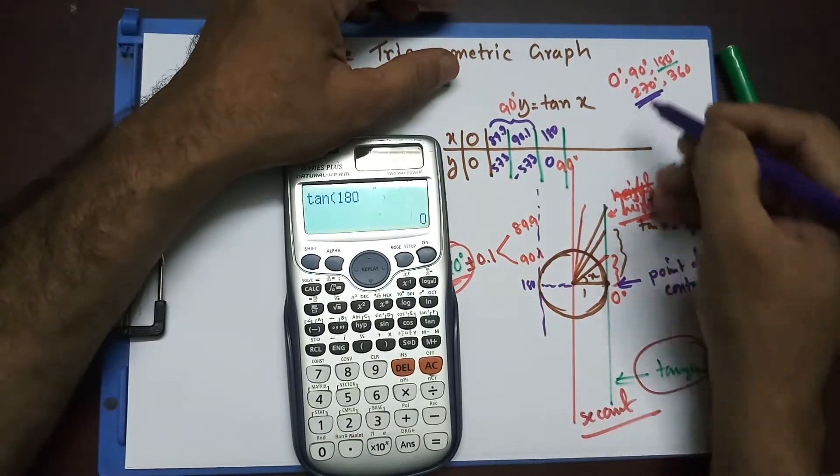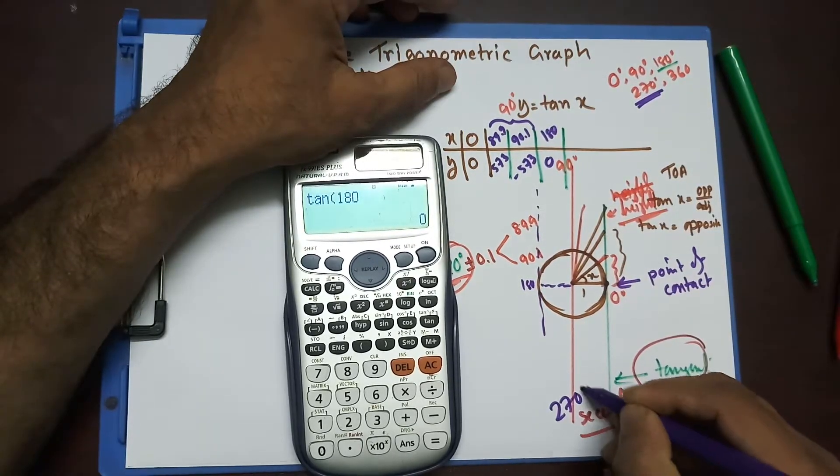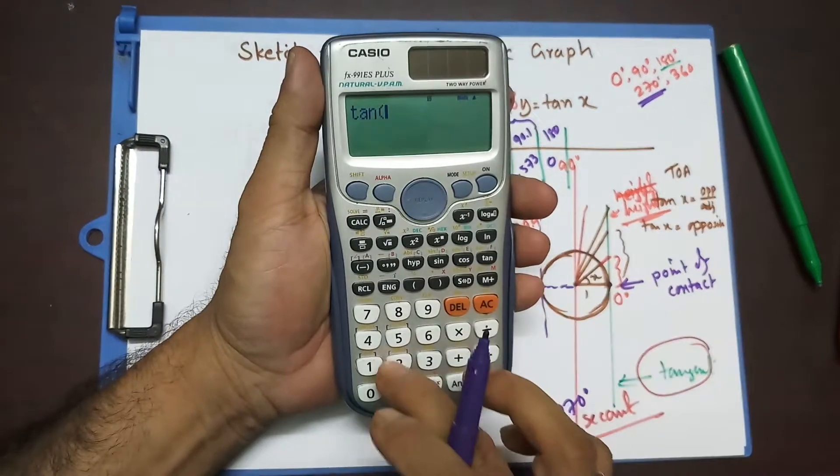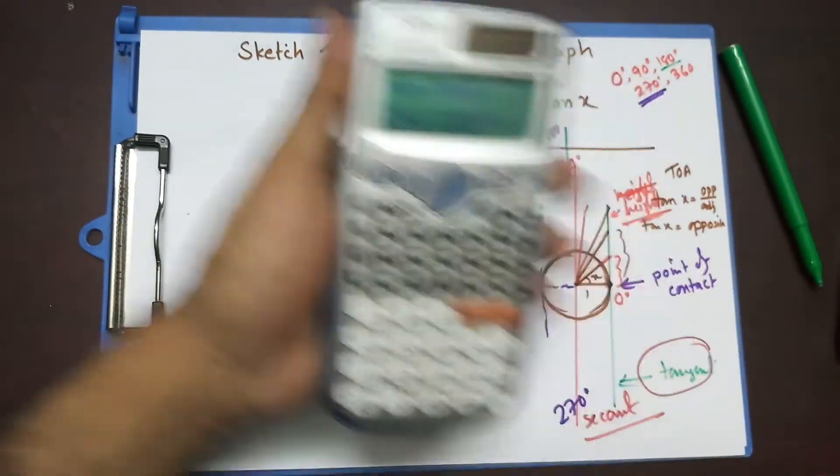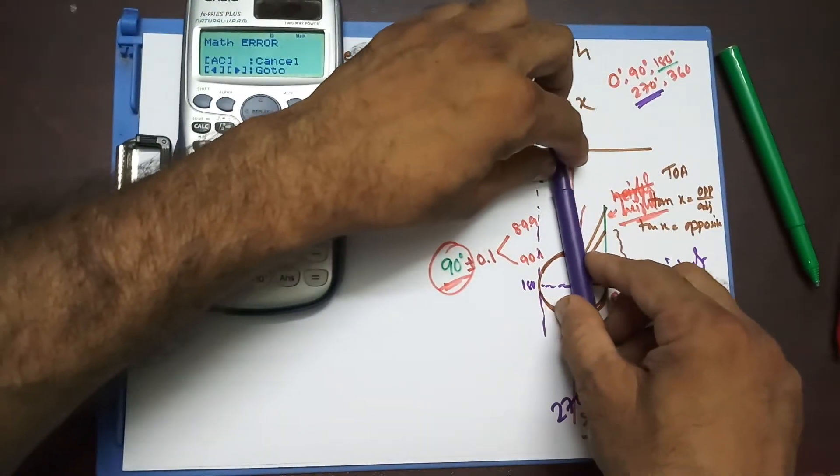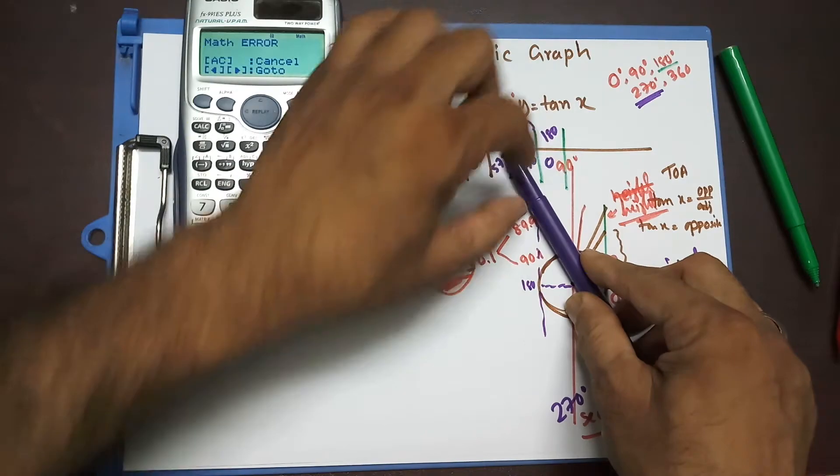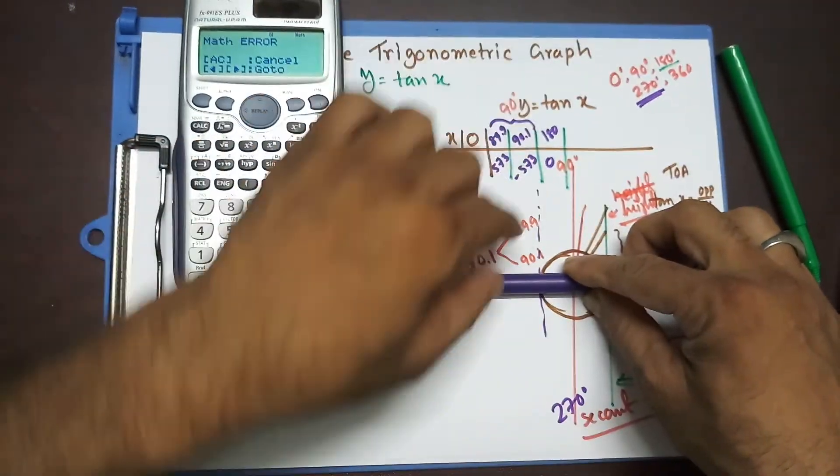Coming to 270 degree. 270 degree, exactly opposite of 90 degree. So, let me write down 270 degree. So, 270 degree, I shouldn't have any values. That's, again, math error. Why? Because when it goes from this way to this way, yes, I'm going to have some height, some height, some height, and no height at 180. That gives me 0.